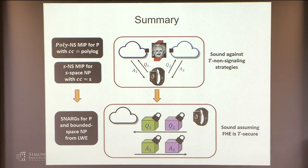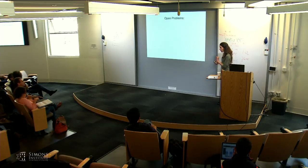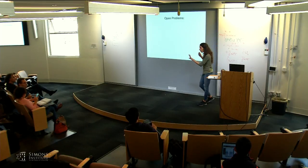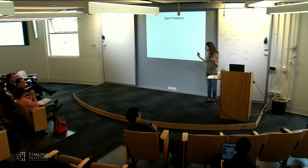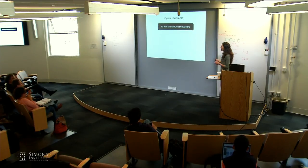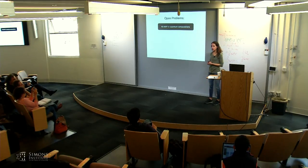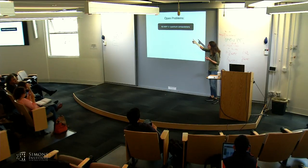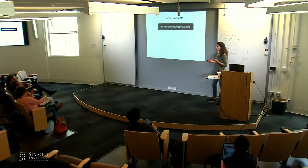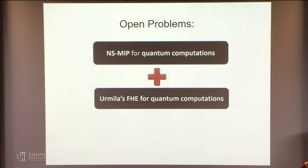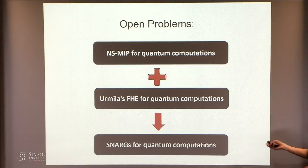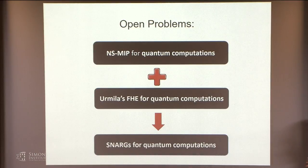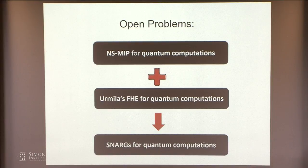What about BQP? If anyone succeeds in coming up with a non-signaling MIP for BQP, then we're golden — thanks to Urmila we have FHE for quantum computations, so you really just combine the two and get a SNARG for quantum computations. If you can construct a non-signaling or computationally non-signaling MIP for quantum computations, you get a SNARG automatically. I think that's a very, very good open problem — it would be great to get there.